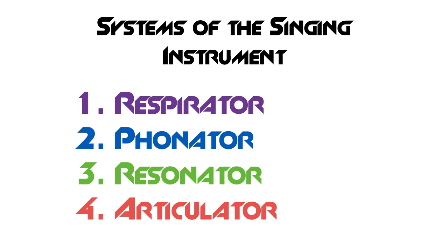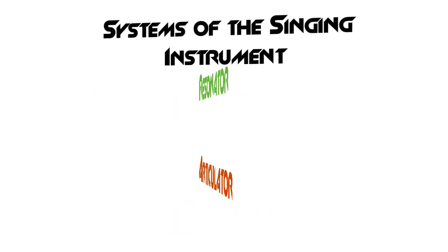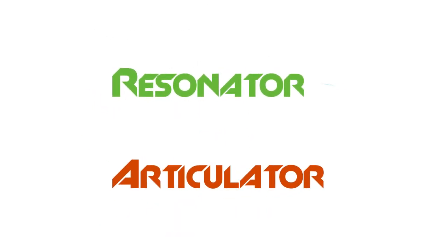On a piano, the hammer would be number one, the piano string would be number two, and then the body of the piano — whether it's a grand piano or an upright piano — would be number three. Three and four are related to each other, and actually articulation is going to determine our resonant space. When we sing words, when we sing lyrics, that articulation of the lyrics is going to determine our resonant space.